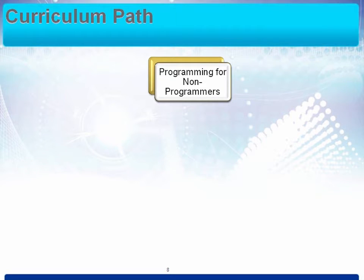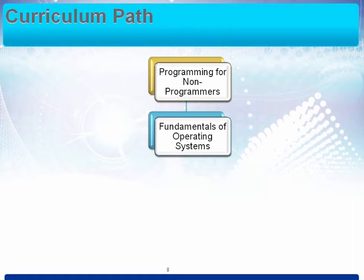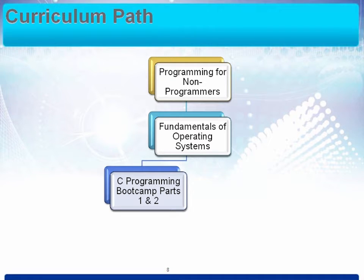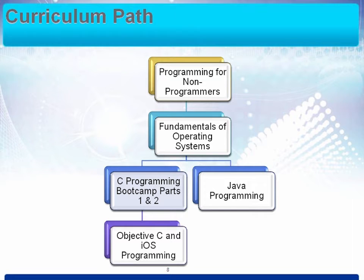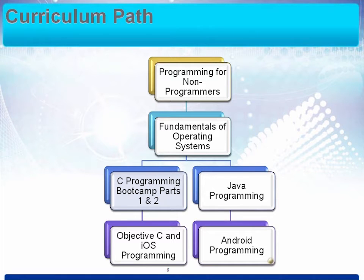Here is the curriculum path. If you're not a programmer, we assume you've had the Programming for Non-Programmers course, so you have an understanding of programming theory and how to approach a problem. If you're not comfortable with computers and operating systems, you'd want to take the Fundamentals of Operating Systems course. That would lead you here to the C Programming Boot Camp Parts 1 and 2. This path is for those interested in Objective-C and iOS programming. If you're not going that route, after Fundamentals of Operating Systems you might move to the other branch and learn Java, which leads into Android programming.